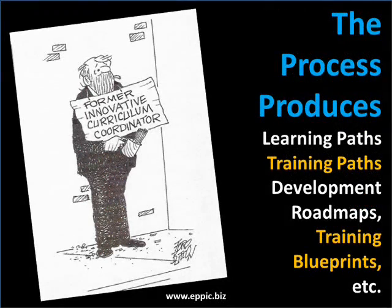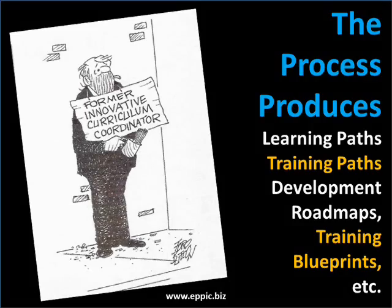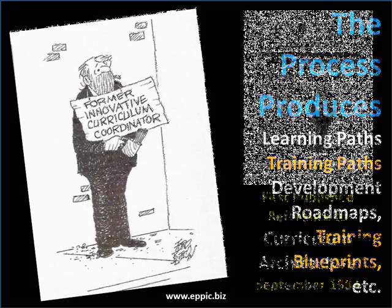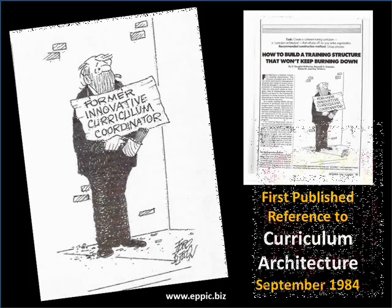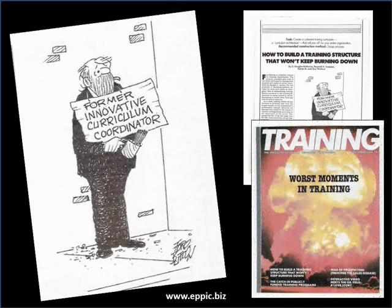Curriculum architecture is known by many names: learning architecture, instructional architecture, training architecture, etc. The curriculum architecture processes produce learning paths, training paths, development roadmaps, training blueprints, etc. These have been known by many different names since I began doing these in 1982. The first published reference to curriculum architecture was in Training Magazine in September 1984.